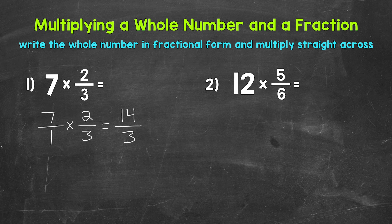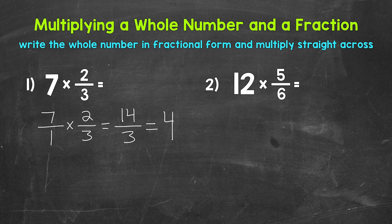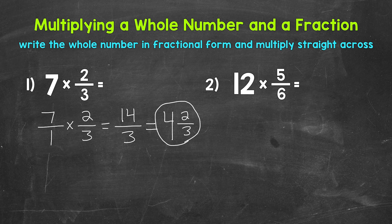Let's convert 14 thirds to a mixed number by dividing the numerator by the denominator: 14 divided by 3. How many whole groups of 3 in 14? Well, 4. That's the whole number part. 4 groups of 3 gets us to 12, so we have a remainder of 2. That remainder is the numerator of the fractional part, and we keep the denominator of 3 the same. 2 thirds is in simplest form. Final answer: 4 and 2 thirds.